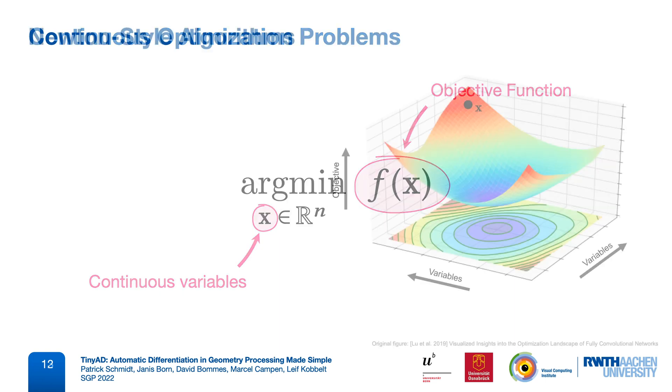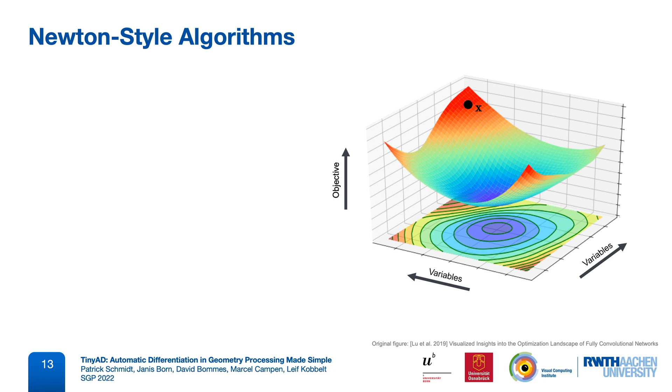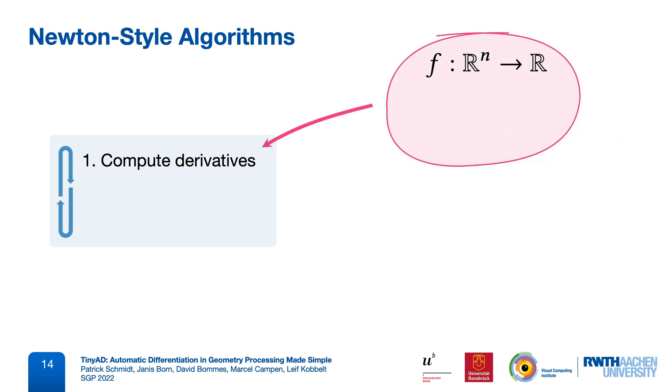One way of solving them is via Newton-style algorithms, where we start with an initial point x, and then iteratively update it, such that the objective decreases. In each iteration, we usually need the derivatives of the objective function at the current point. For a scalar function of n variables, these are the gradient of f, an n-dimensional vector of partial derivatives, and usually also the Hessian matrix that contains second-order derivatives.